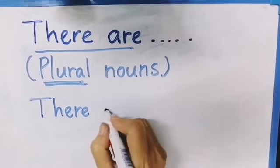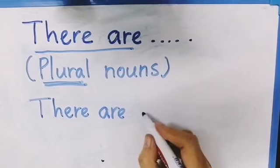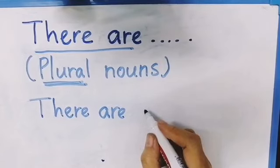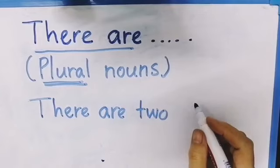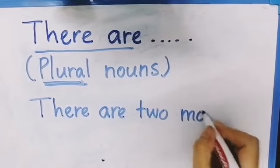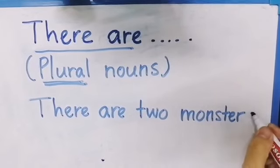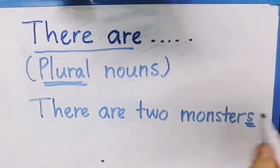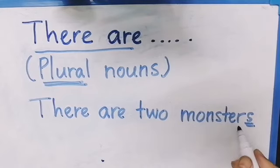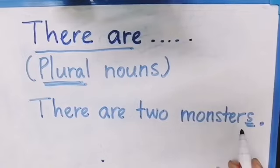Remember, 'there are' is for plural — more than one. For example, take the noun 'monster': add an S for plural nouns, and it becomes 'monsters'. So the sentence is: 'There are two monsters.'